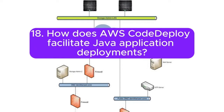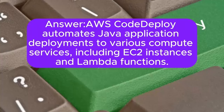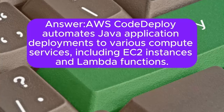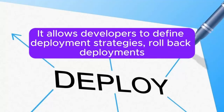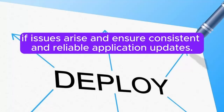Question 18: How does AWS CodeDeploy facilitate Java application deployments? AWS CodeDeploy automates Java application deployments to various compute services, including EC2 instances and Lambda functions. It allows developers to define deployment strategies, rollback deployments if issues arise, and ensure consistent and reliable application updates.